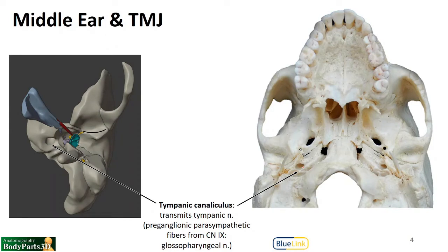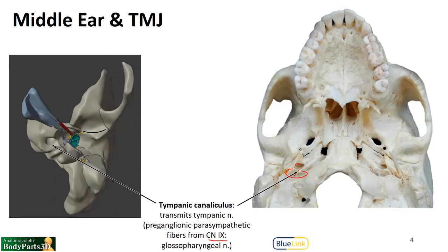The middle ear is also closely related to the TMJ, and we'll talk specifically about the openings that connect between the area of the TMJ and the middle ear. The first one is this pinpoint opening — we can see it represented on the left side as a tiny red dot. The tympanic canaliculus is related to the glossopharyngeal nerve, which exits from the jugular foramen. It comes out and gives off a branch that re-enters into the middle ear — that branch is the tympanic nerve.